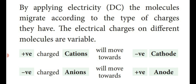The principle used in gel electrophoresis is: by applying direct current electricity, the molecules migrate according to the type of charges they have. Depending on the charges, molecules move from one place to another. The electrical charges on different molecules are variable. Positive charged cations move towards the negative cathode, and negative charged anions move towards the positive anode — opposite charges attract each other.